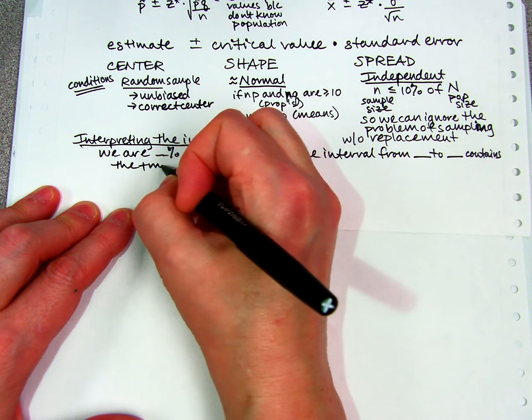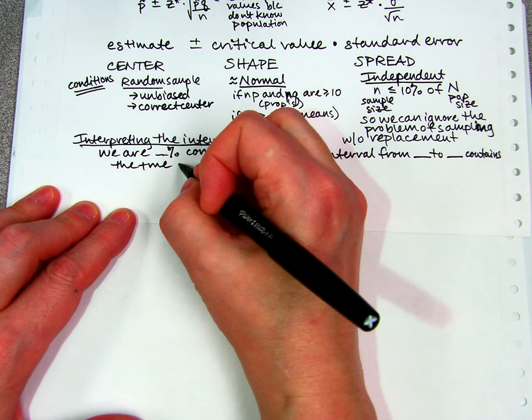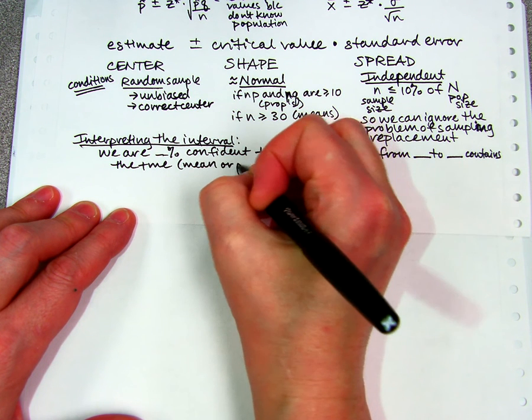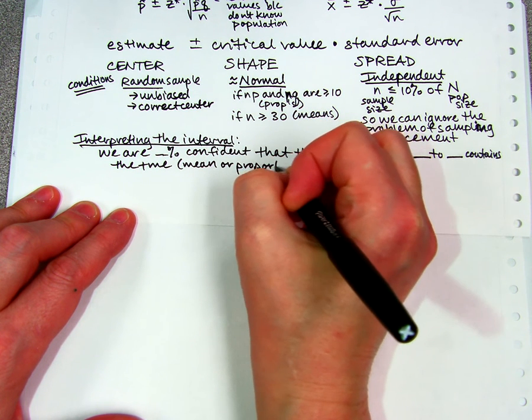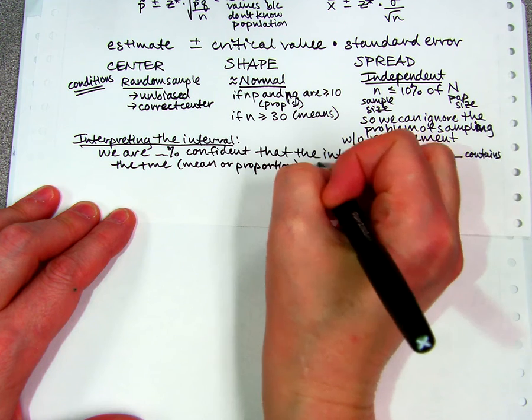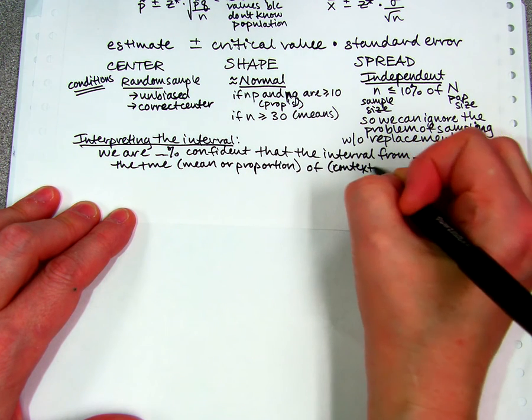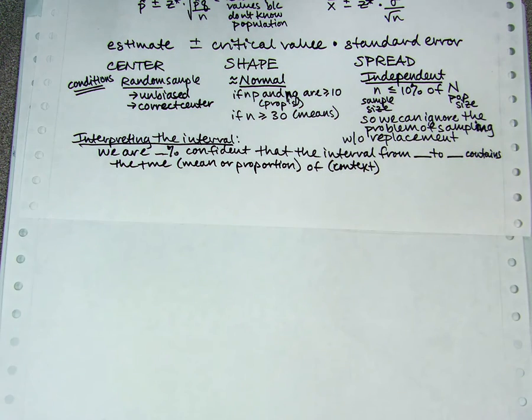...the true parameter, which is a mean or a proportion, of—don't forget your context.